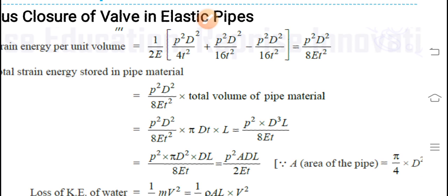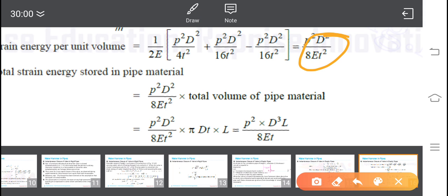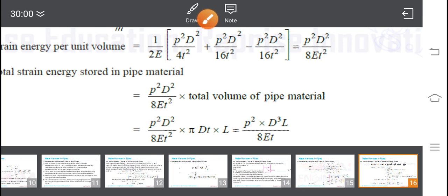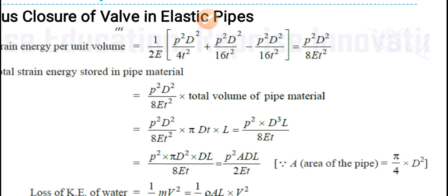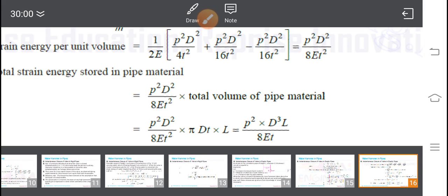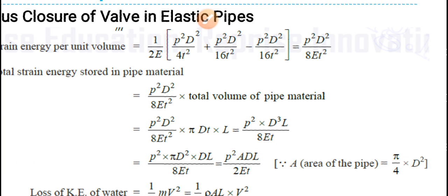The stored energy per unit volume equals (1/2E) multiplied by [p²D²/4t² + p²D²/16t² − p²D²/16t²], which simplifies to p²D²/(8Et²). The strain energy stored in the pipe material is this amount multiplied by the total volume of pipe material, which is π·D·t·L, where D is diameter, t is thickness, and L is length. This gives p²D³L/(8Et).